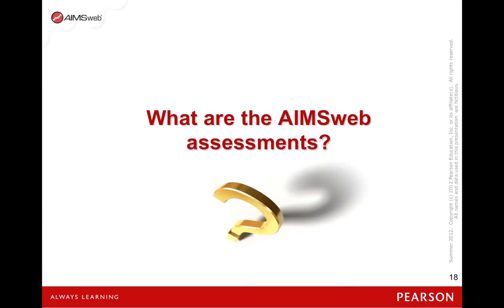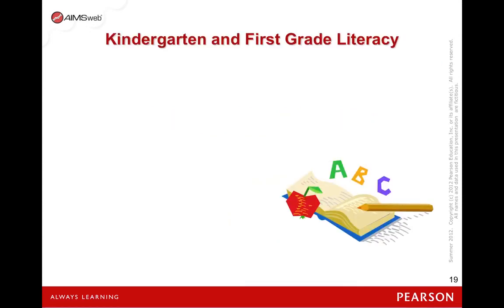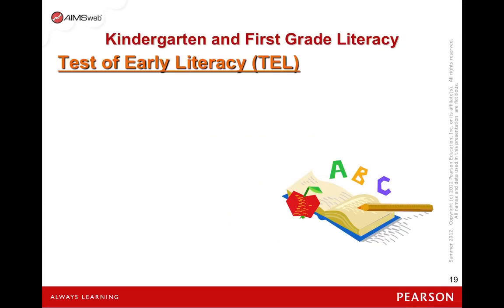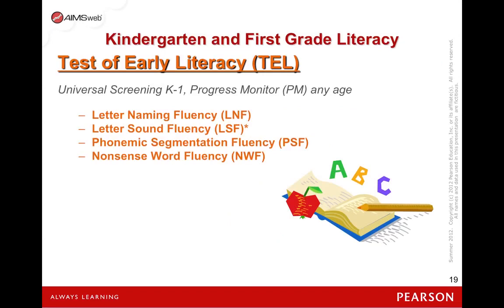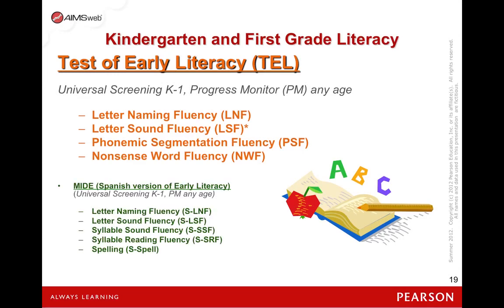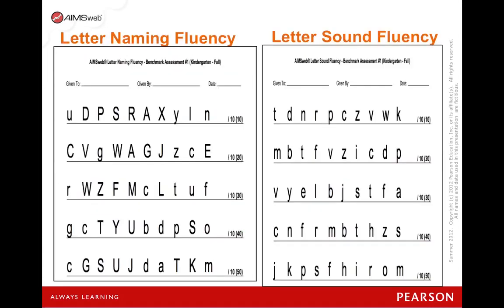So what are the AIMSweb assessments? At kindergarten and first grade, there are four assessments for the tests of early literacy: letter naming fluency, letter sound fluency, phoneme segmentation, and nonsense word. Three of those four are identical to what we see in DIBELS.